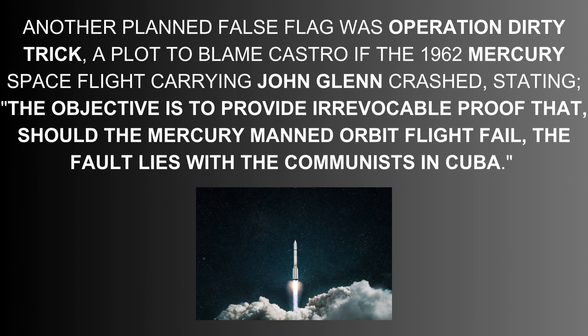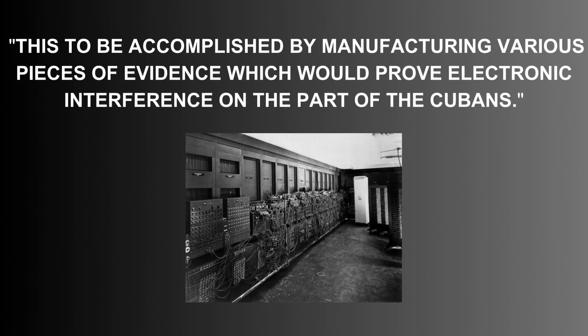Another planned false flag was Operation Dirty Trick — a plot to blame Castro if the 1962 Mercury spaceflight carrying John Glenn crashed, stating the objective is to provide irrevocable proof that should the Mercury-manned orbit flight fail, the fault lies with the Communists in Cuba. This was to be accomplished by manufacturing various pieces of evidence which would prove electronic interference on the part of the Cubans.